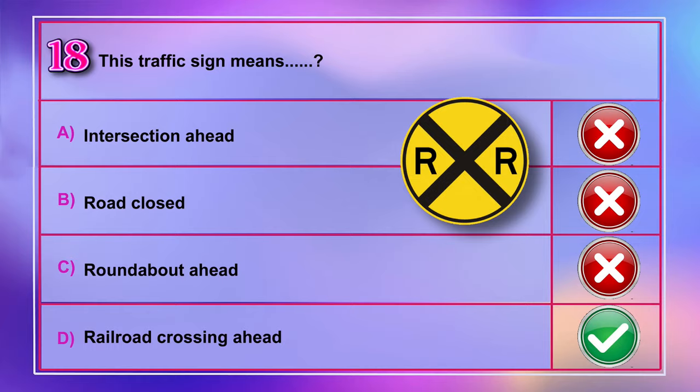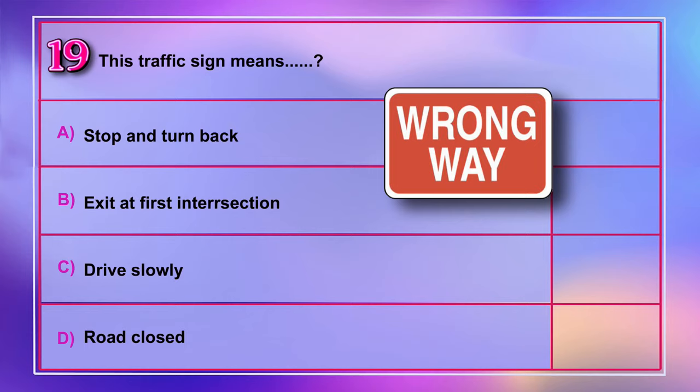Question number 19: This traffic sign means A) stop and turn back, B) exit at first intersection, C) drive slowly, D) road closed. Correct answer is A: stop and turn back.